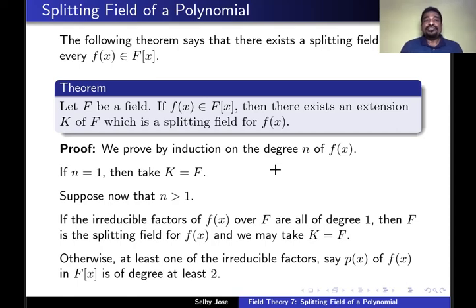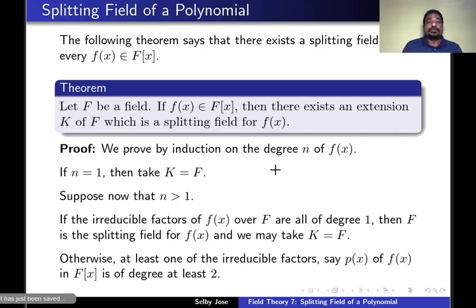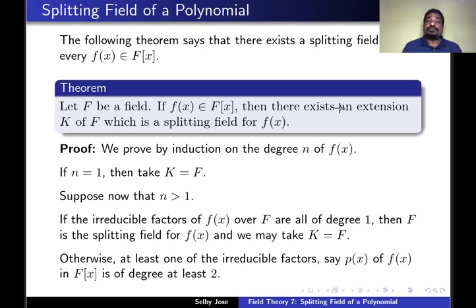The following theorem says that for each polynomial f(x) in F[x], f(x) has a splitting field. Specifically, let f be a field; if f(x) belongs to F[x], then you can find an extension k over f which is a splitting field of f(x).